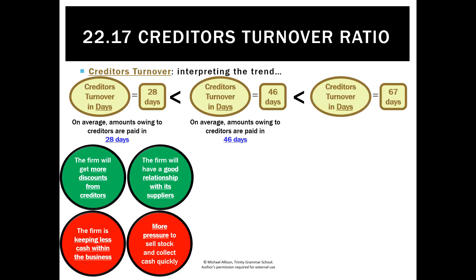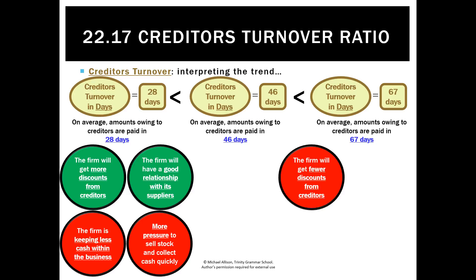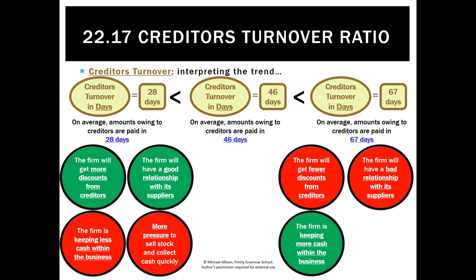If the trend increased to 67 days, on one hand that's a negative result as we're probably likely to get fewer discounts from creditors — and discounts reduce the amount of cash we pay and also increase our profit because they're a revenue item. We'll also have a bad relationship with suppliers; they might stop selling to us, stop giving us free delivery, or increase prices.